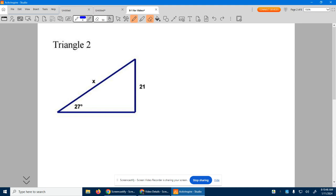Triangle two. We have a right triangle, so we know the right angle's right here. Once I know that, I know X is my hypotenuse.